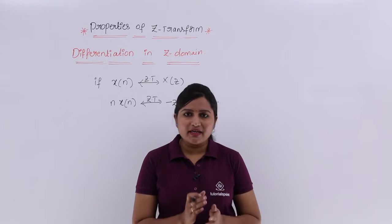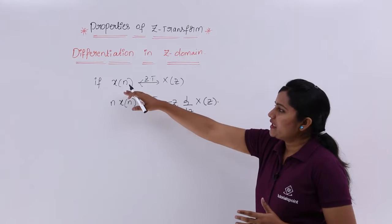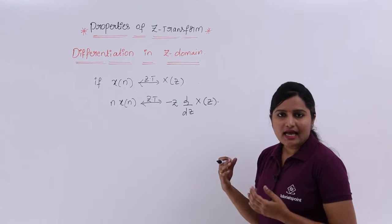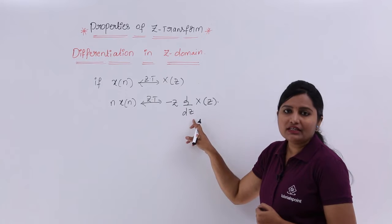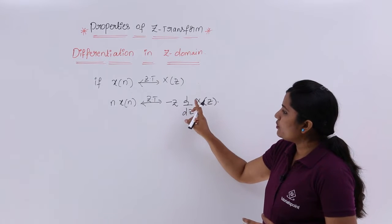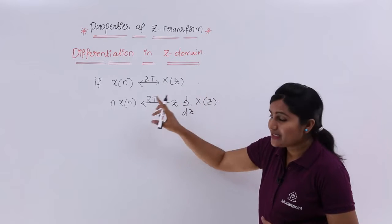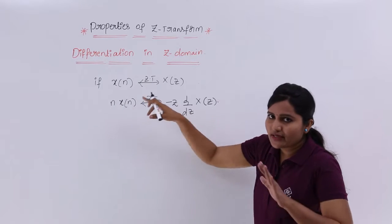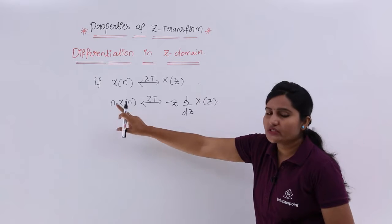In this video we are going to discuss a very important property of Z transforms: differentiation in Z domain. This property states that if X(N) is a discrete time sequence having Z transform X(Z), then the Z transform of N·X(N) is minus Z times d/dZ of X(Z). Equivalently, if you take d/dZ of X(Z) multiplied by minus Z, the corresponding sequence is N·X(N).